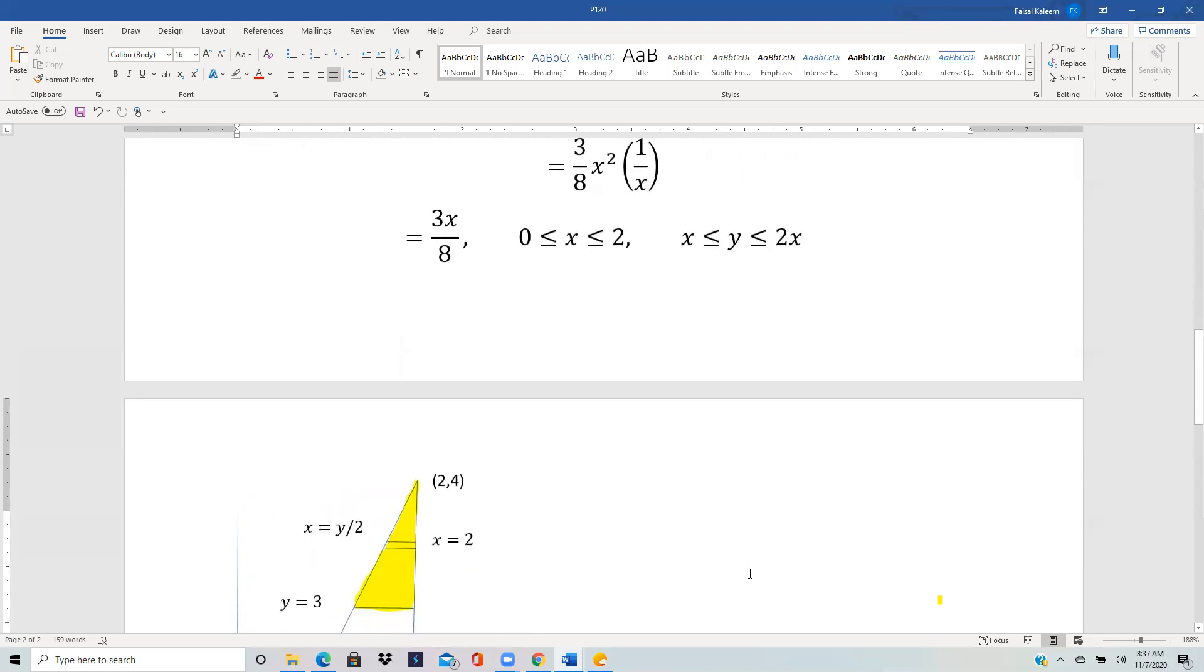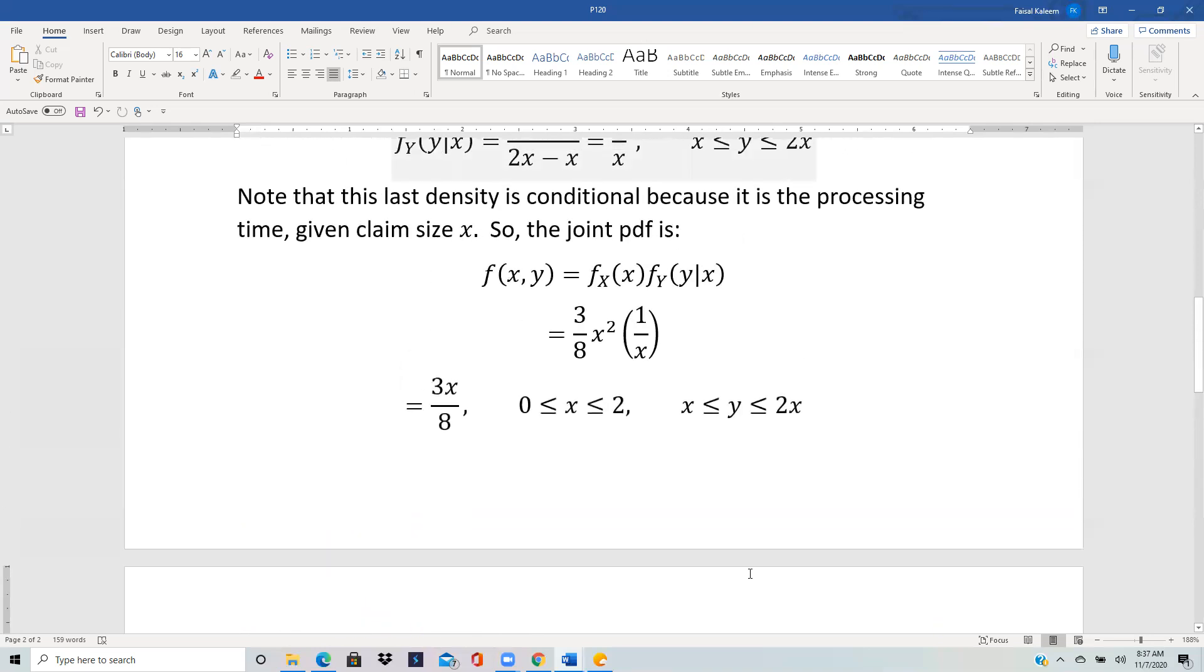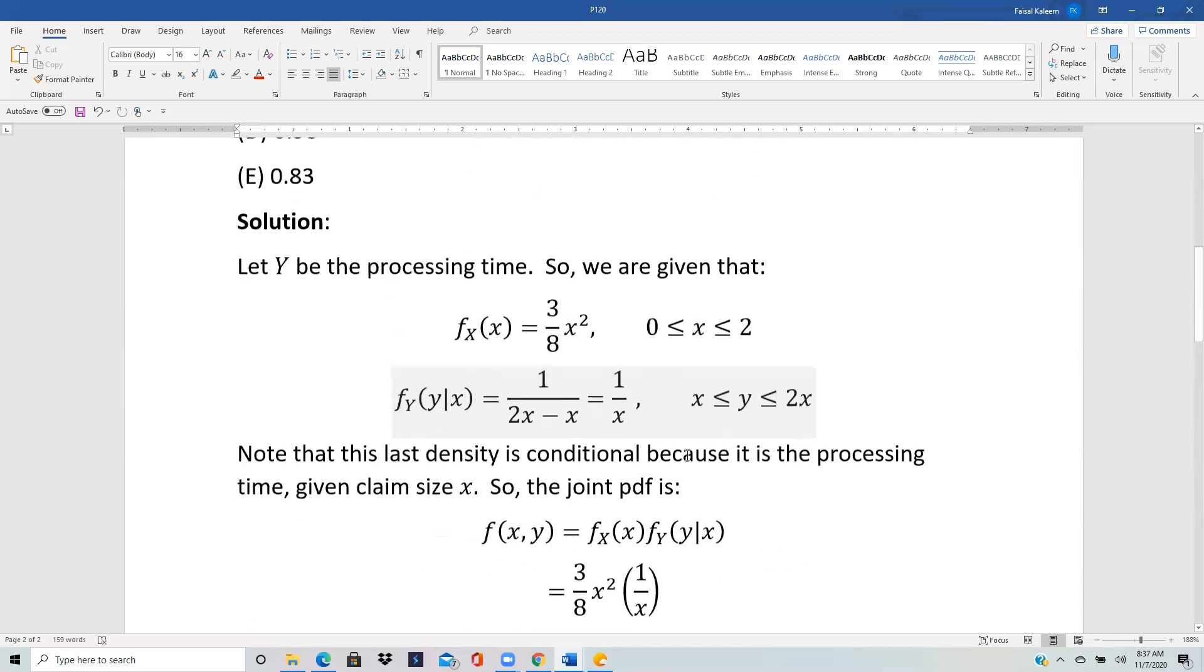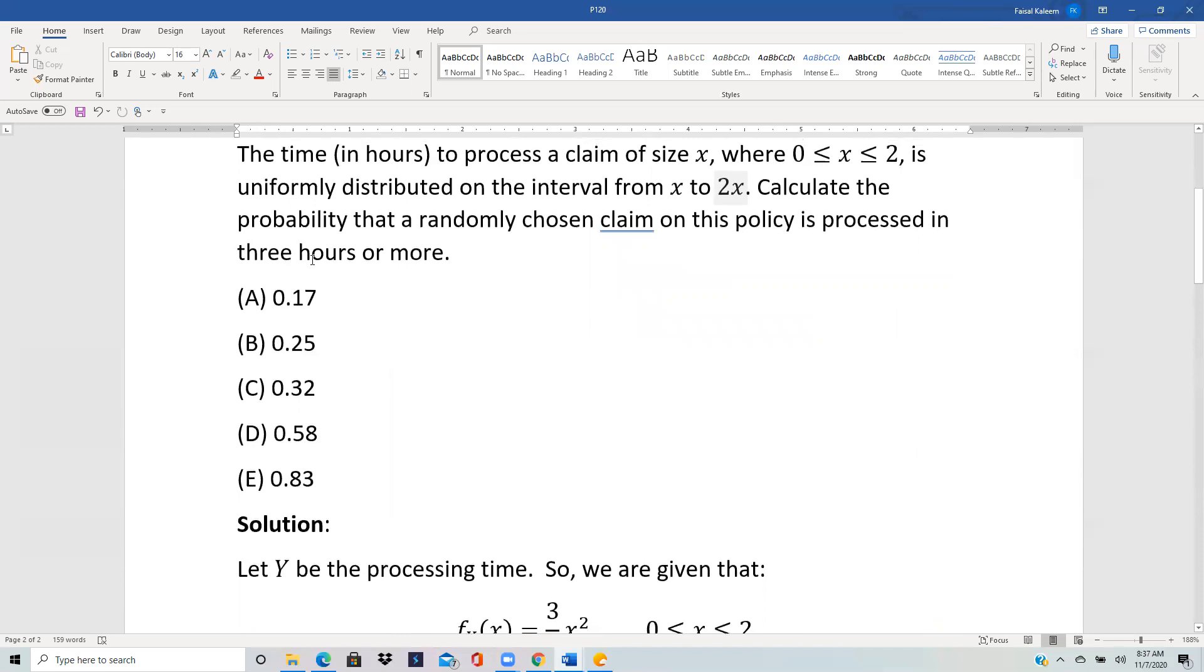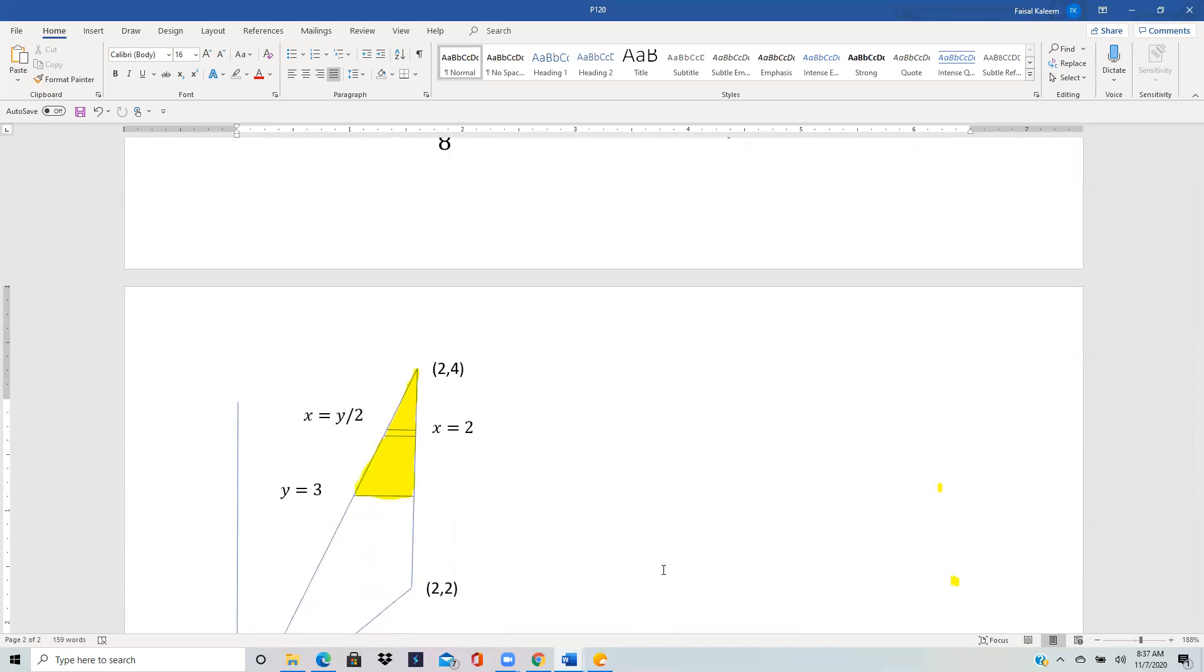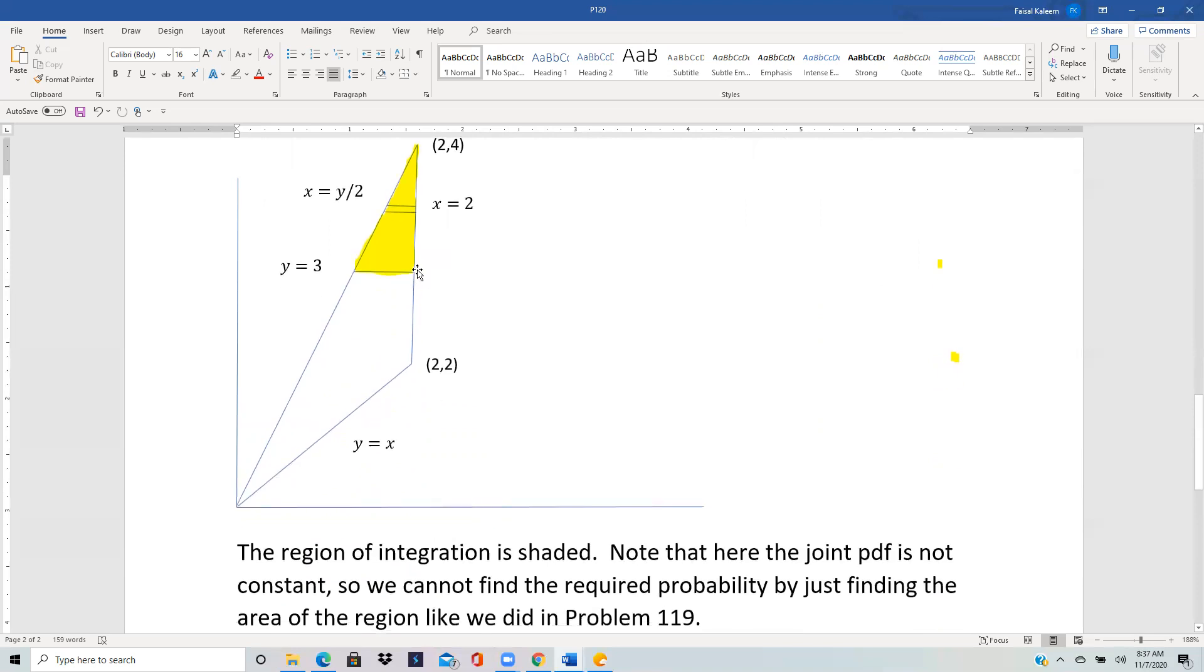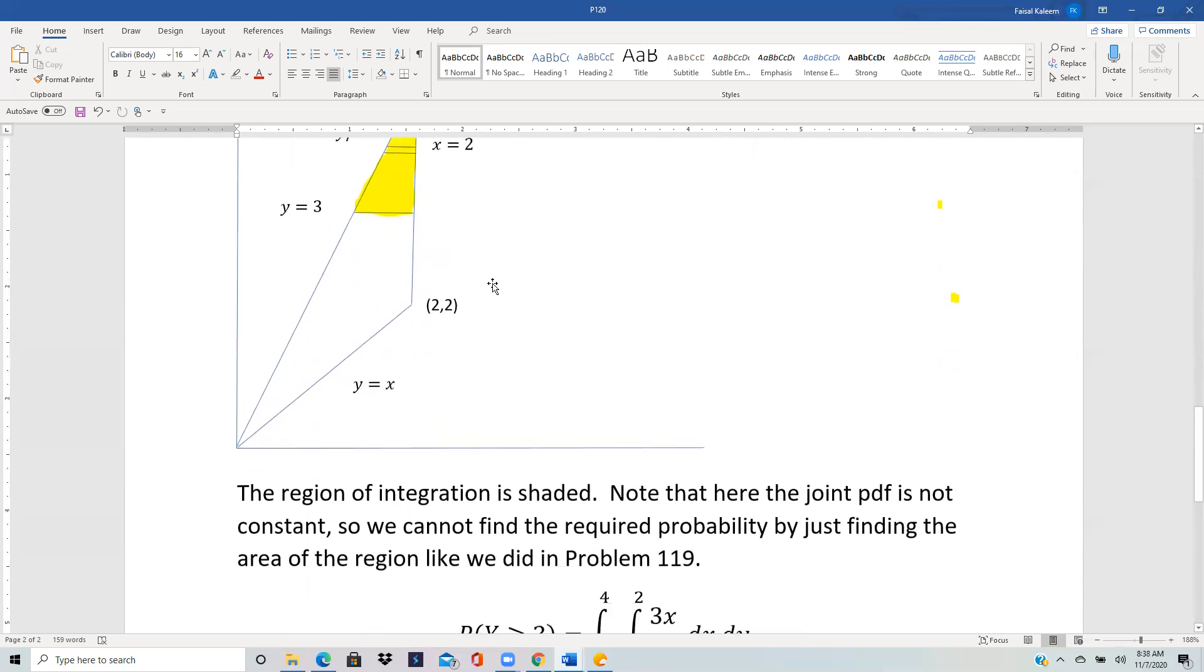So you do have to go through the double integration. You want Y bigger than or equal to three, three hours or more. So probability Y bigger than equal to three, you will carry out the double integration of the joint pdf over this region.